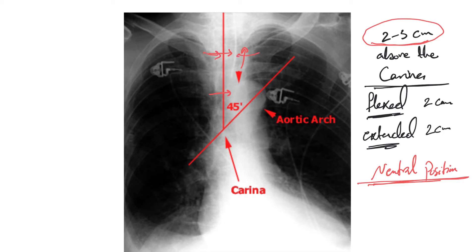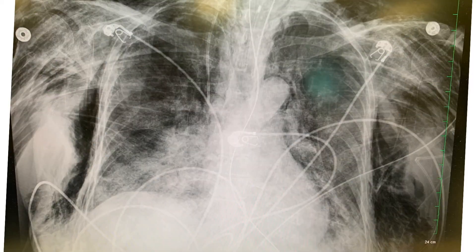If the tube appears at the level of the clavicle, tell them to advance it. Most x-ray software has rulers for accurate measurement, but a rough estimate works as well. Now let's look at some real chest x-rays and comment on the ET tube positions.